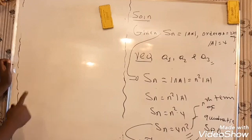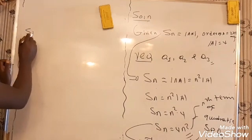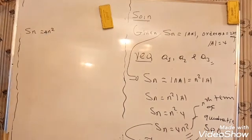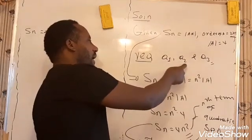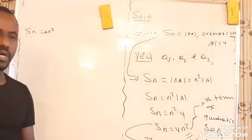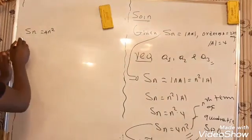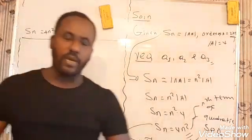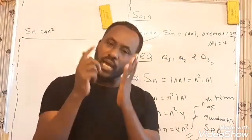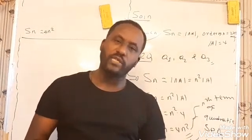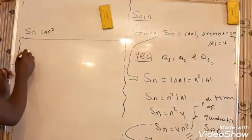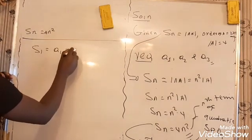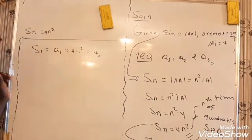Therefore, how are we going to determine the terms? You have already been given Sn = 4n². So, A1 of the sequence is S1, which is always given by 4 times 1 squared. That is equal to 4. S1 is 4.